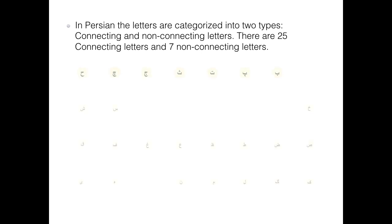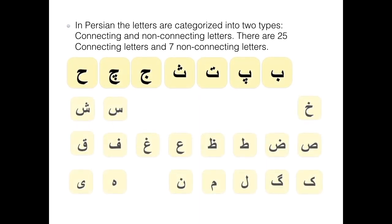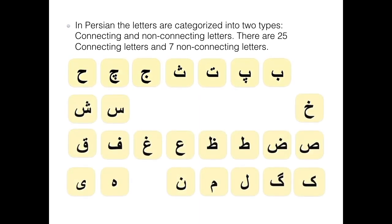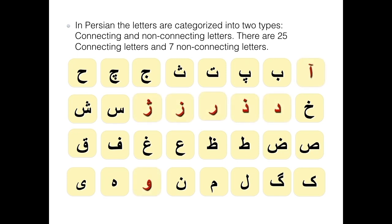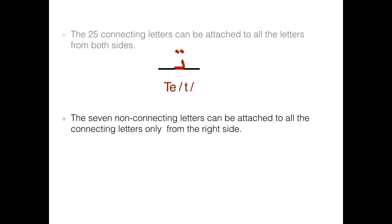In Persian, the letters are categorized into two types: connecting and non-connecting letters. There are 25 connecting letters and 7 non-connecting letters. The 25 connecting letters can be attached to all the letters from both sides. The 7 non-connecting letters can be attached to all the connecting letters only from the right side.